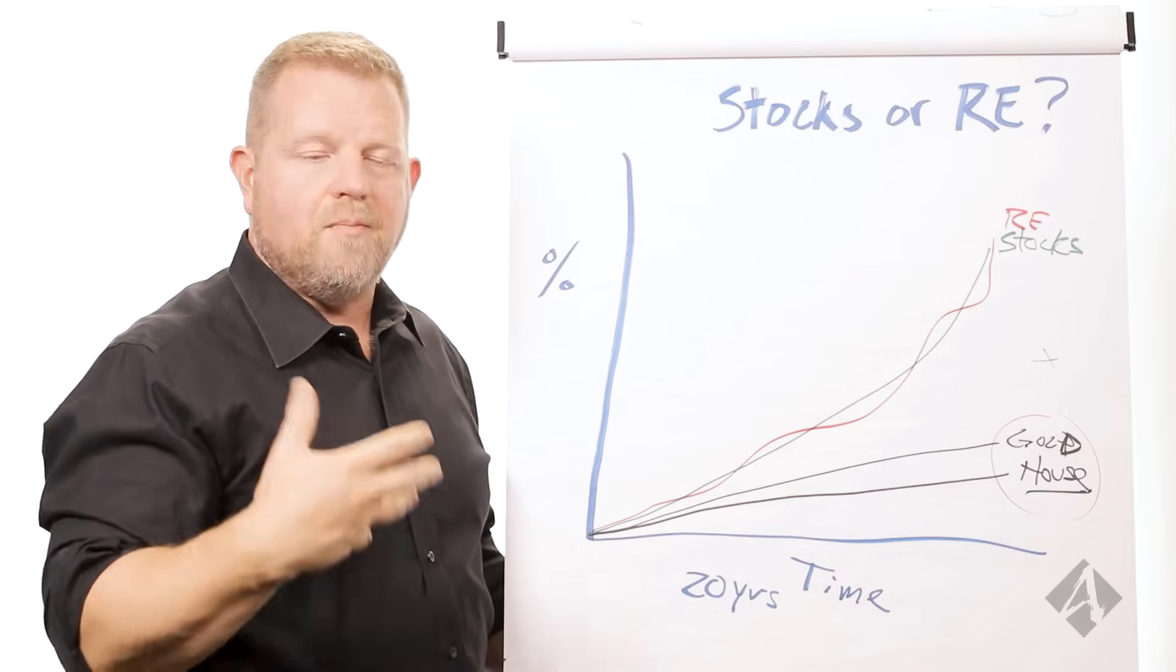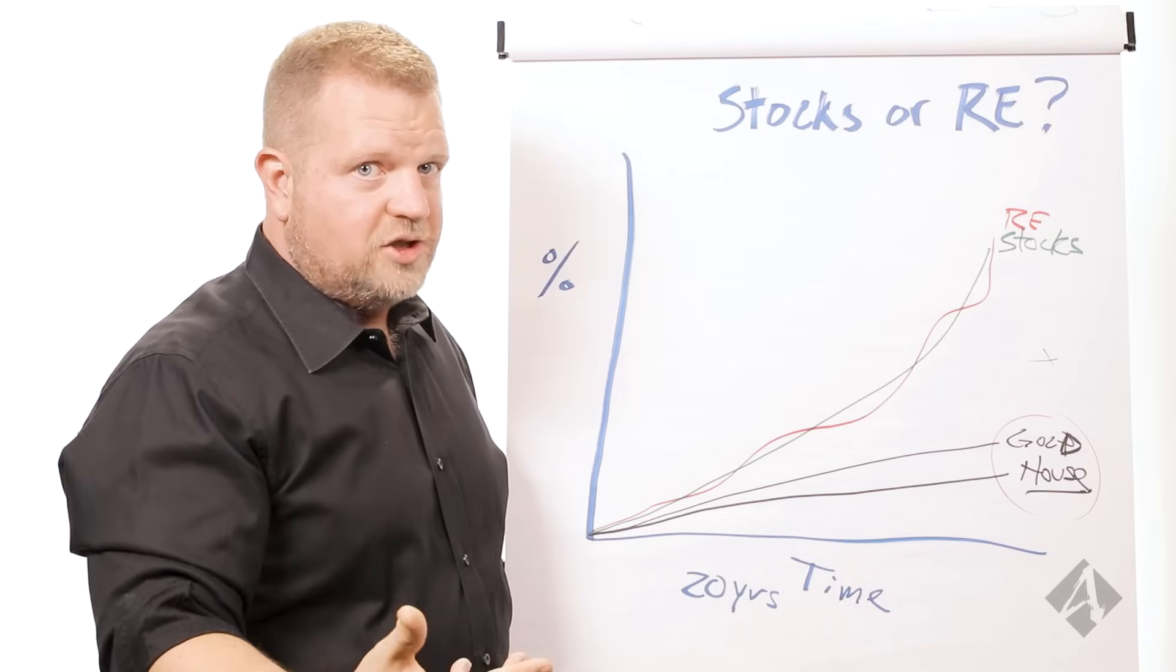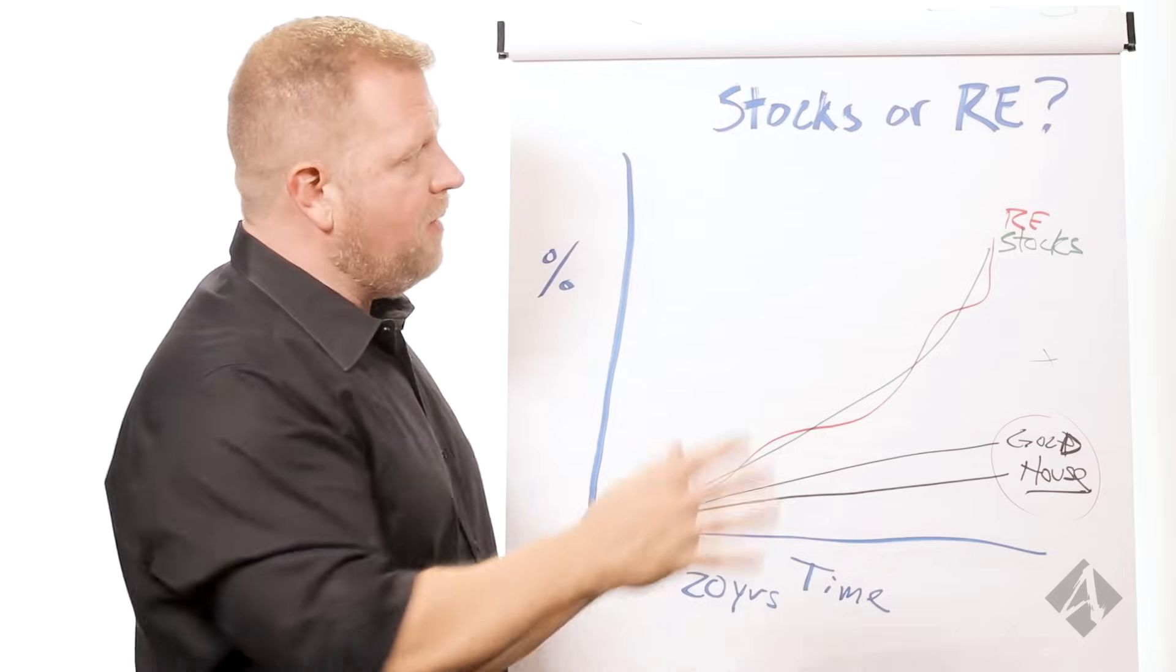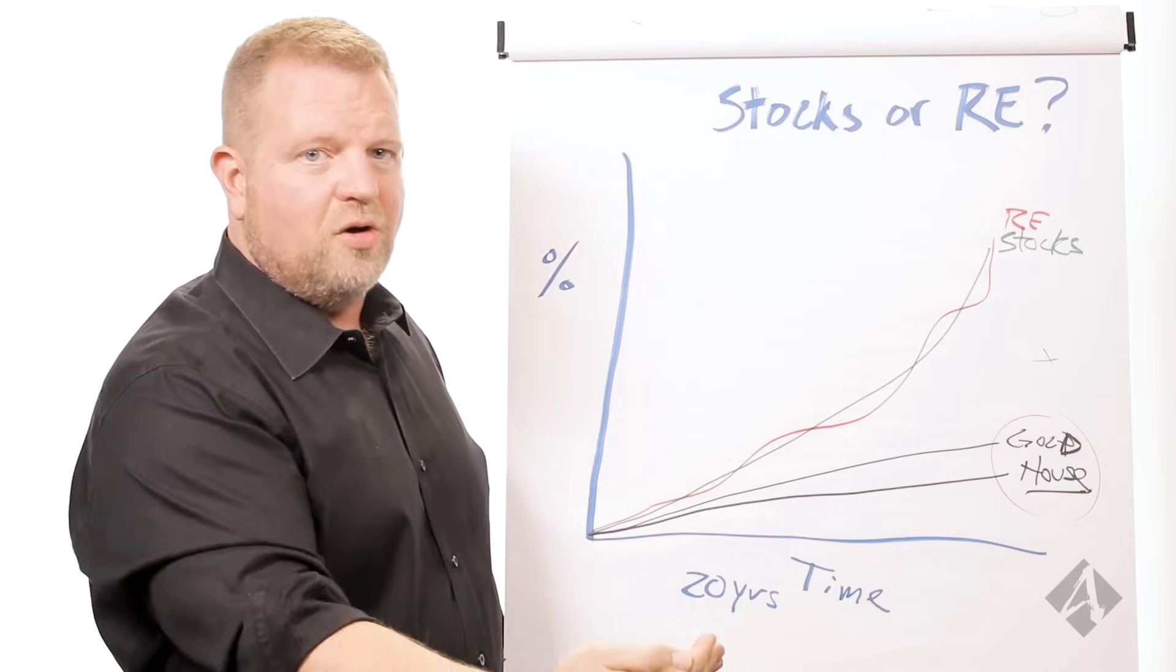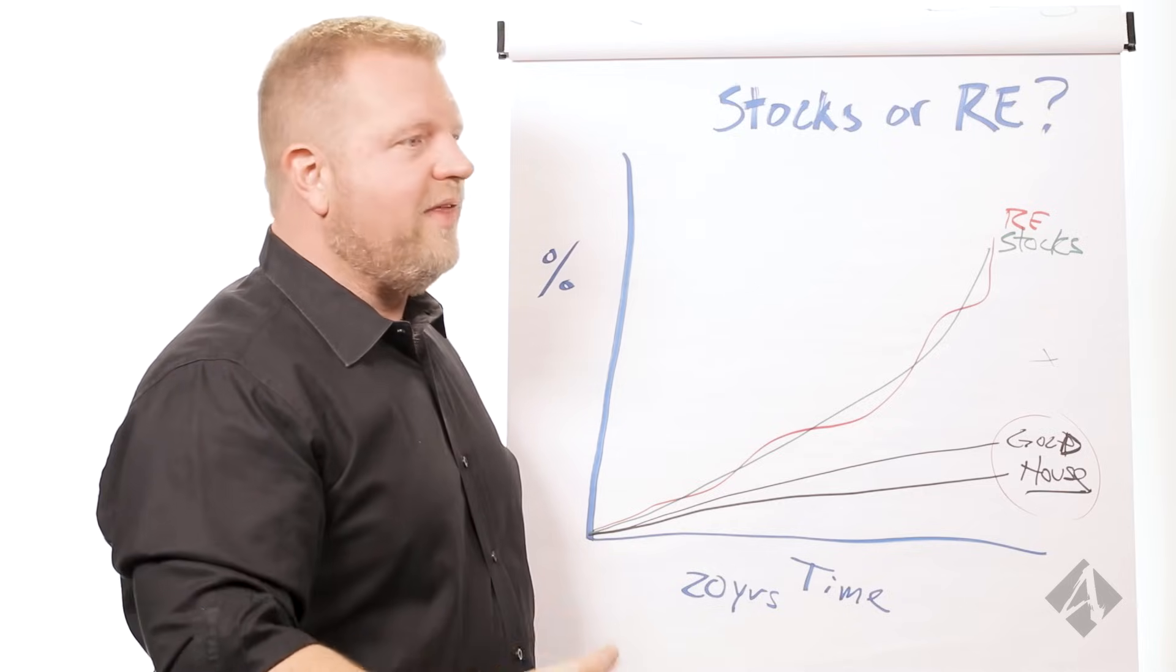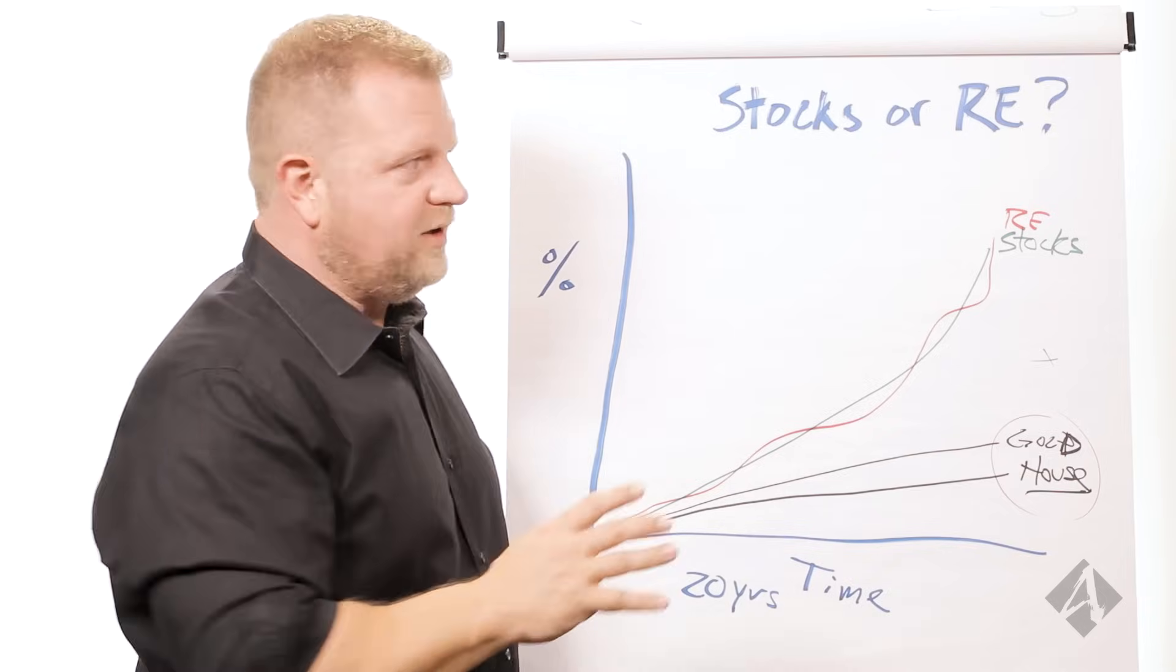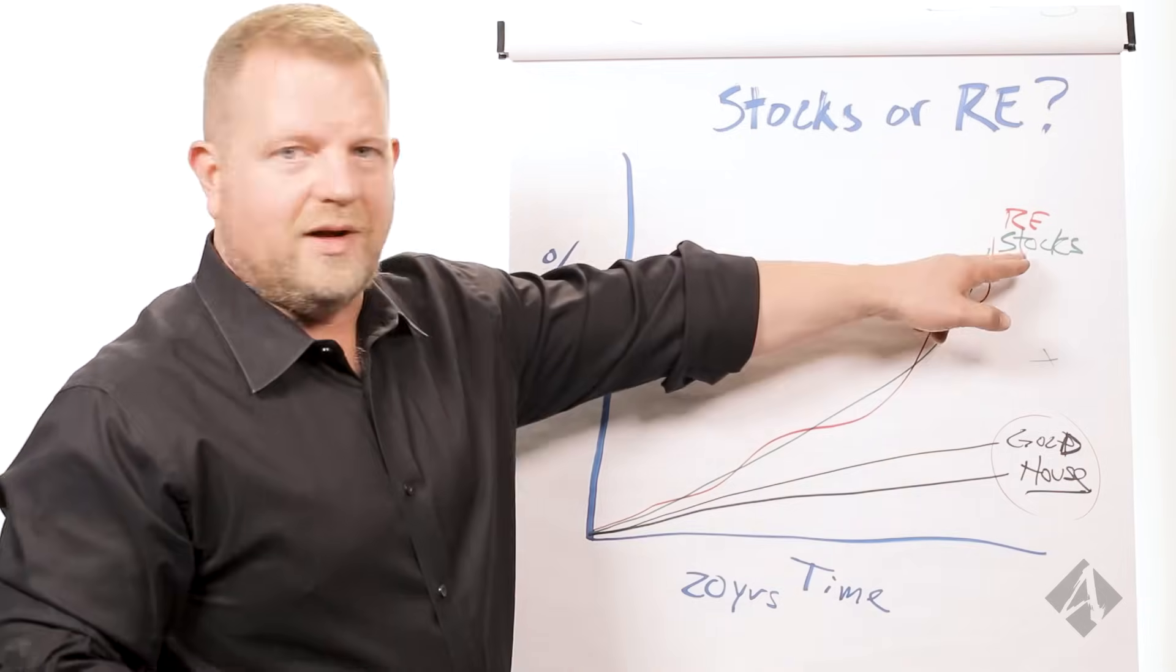stocks are more liquid. I can buy a share of AT&T today. I could sell it tomorrow and I could get access to that cash within two days. If I buy real estate, I could buy it today. I'm probably not going to be able to close. Even if I was doing cash, it's still going to be a week or two. And usually you're closing. It's going to be 30 days to 60 days. And then if I sell it, I'm going to be looking at the same. I'm much more delayed and slower in real estate than I am when I'm doing stocks.